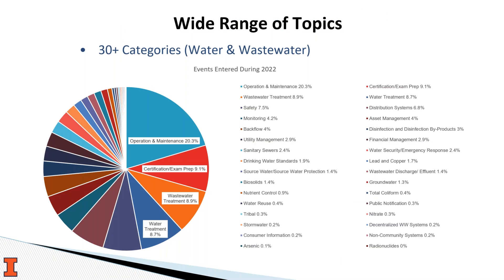As mentioned earlier, we deal with a wide range of topics and every resource we add is tagged with a specific category integrated into our search engine. This chart shows the breakdown of categories or topics covered from around 13,000 events added during 2022. It highlights how many events focus on operations and maintenance, water and wastewater treatment, and certification prep. But you also see topics like decentralized wastewater systems — the topic we're discussing today — as well as tribal, water security, and lead and copper, which is more popular now because of the revised lead and copper rule.